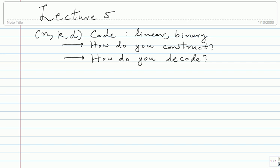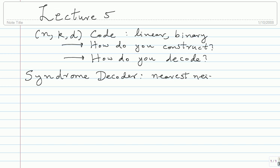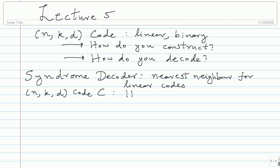For now we will assume somebody gives us an NKD code and let's try to decode it as well as possible. The next thing we will see is syndrome decoding. Let H be a parity check matrix — I said 'a' parity check matrix, not 'the', because any set of N minus K basis vectors for your dual space will give you a matrix. You can have many parity check matrices for the same code, and many generator matrices for the same code.